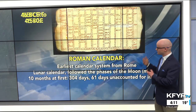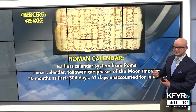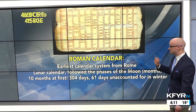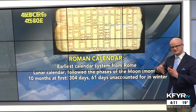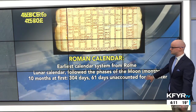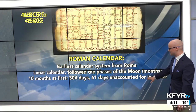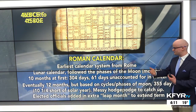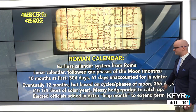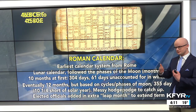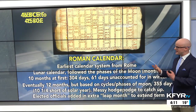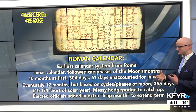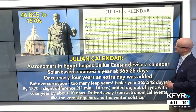So let's go back in time with the Roman calendar before 446 BCE. The earliest calendar system from Rome was a lunar calendar that followed the phases of the moon, which dictates the months. That's a relic we still use today. It was only 10 months at first — 304 days — with 61 days unaccounted for in the winter. Eventually they moved to 12 months, but it was based on the cycles and phases of the moon and was only 355 days — 10 and a quarter days short of the actual solar year. There was a messy patchwork where elected officials in Rome were adding extra leap months to catch up and extend their terms.